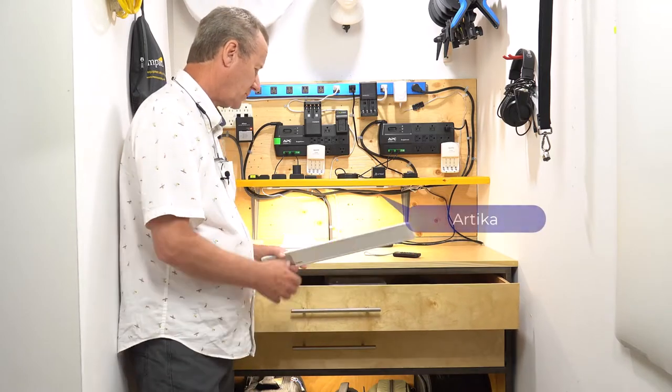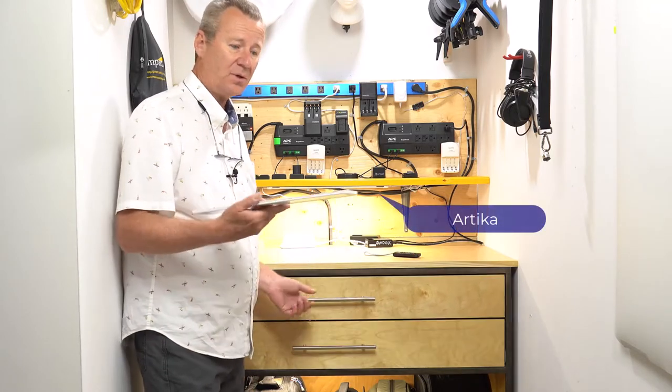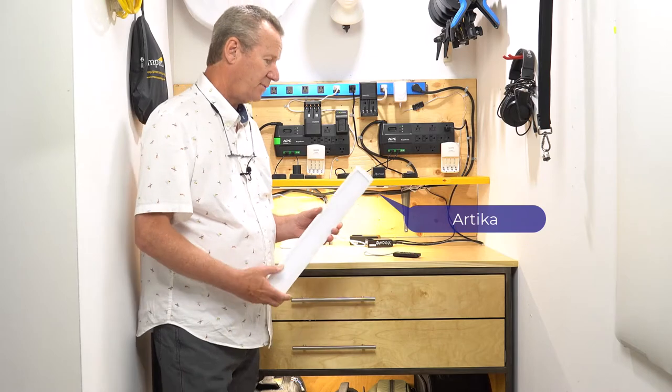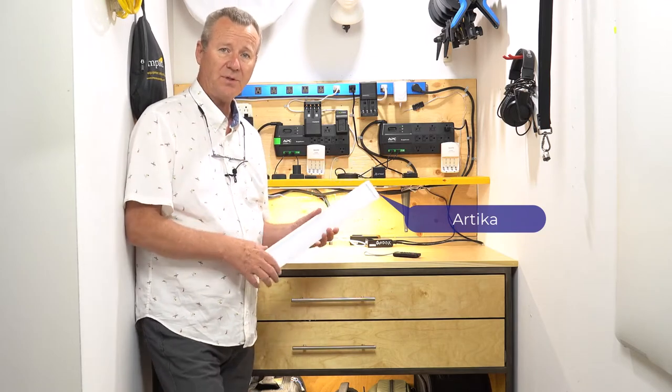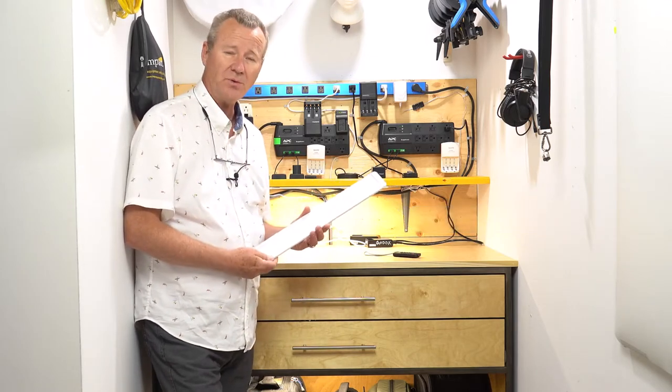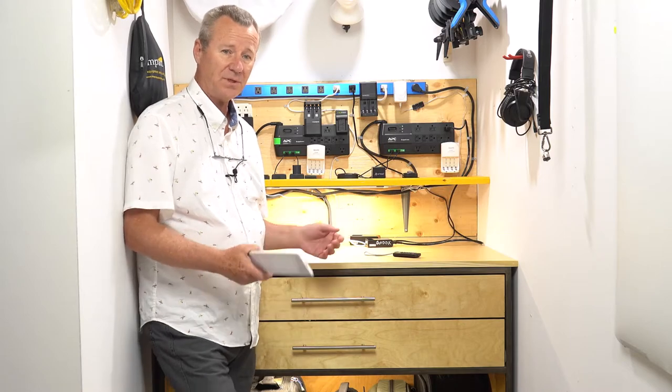And the lighting for the system, I got from Costco. These are Artica lights. I've used these before. I've got them in my kitchen upstairs. They come in a pack of three, they're about 25 bucks, and they're just ideal for this kind of stuff.